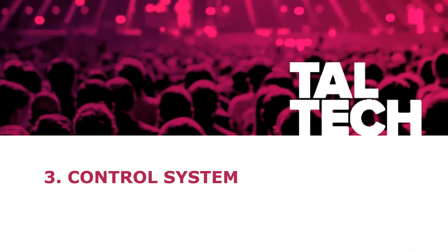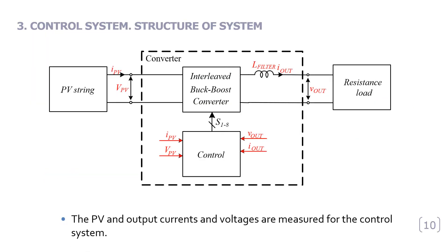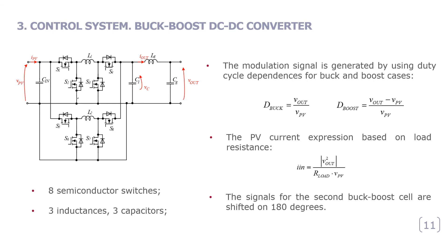The next part corresponds to the control system description. A simple structure of the system was built to confirm the proposed method. The structure consists of four main parts: the PV string, interleaved buck-boost DC-DC converter, control part, and a load that is just a simple resistance. The MPPT or global MPPT operates with a closed loop system, and the control block considers the PV and load voltages and currents. On this slide you can see short details of the selected topology — the interleaved buck-boost DC-DC converter. The expressions for the duty cycle of buck or boost modes are drawn on the right. The transistor signals are the same for each cell but have a shift of 180 degrees.